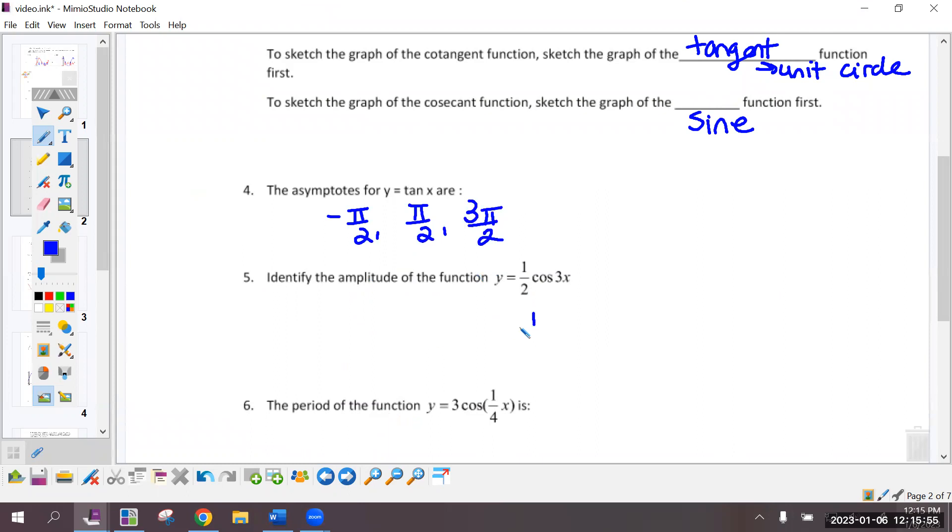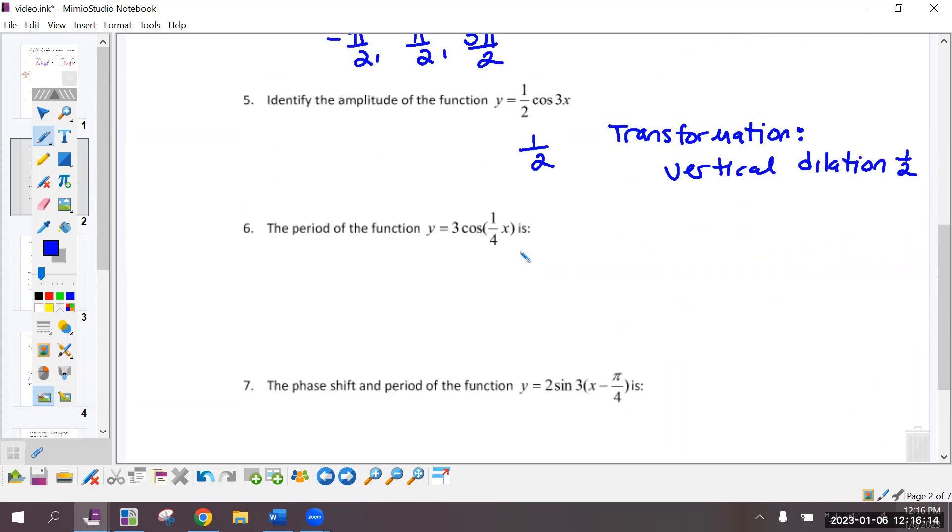The amplitude of this function is 1 half. As a transformation, I know it doesn't ask that, but I'm going to review it. That's a vertical dilation of a half. But the amplitude is a half. What is the period? So this B value, that's a horizontal dilation of a quarter. Here, the new period is 2 pi over B. When we divide by a fraction, that's the same thing as multiplying by the reciprocal. So we get 8 pi over 1, so the period is 8 pi because of the horizontal dilation of a quarter.